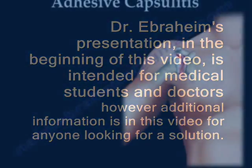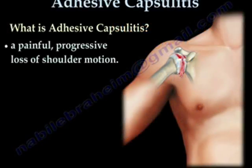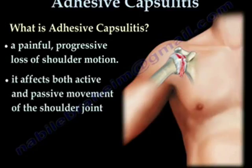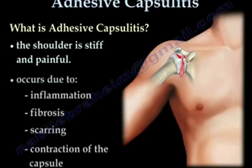Frozen shoulder, or adhesive capsulitis, is a painful progressive loss of shoulder motion. It affects both active and passive movement of the shoulder joint. The shoulder is stiff and painful. It occurs due to inflammation, fibrosis, scarring, and contracture of the capsule of the shoulder joint.